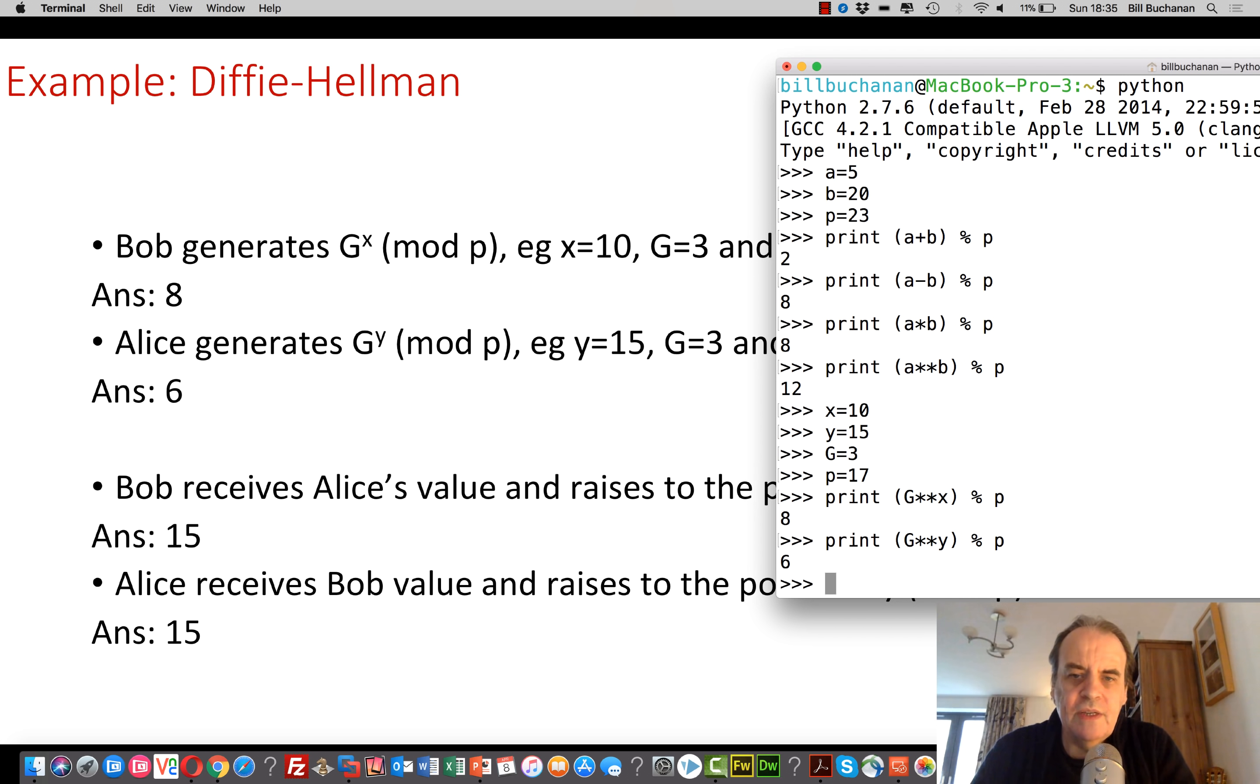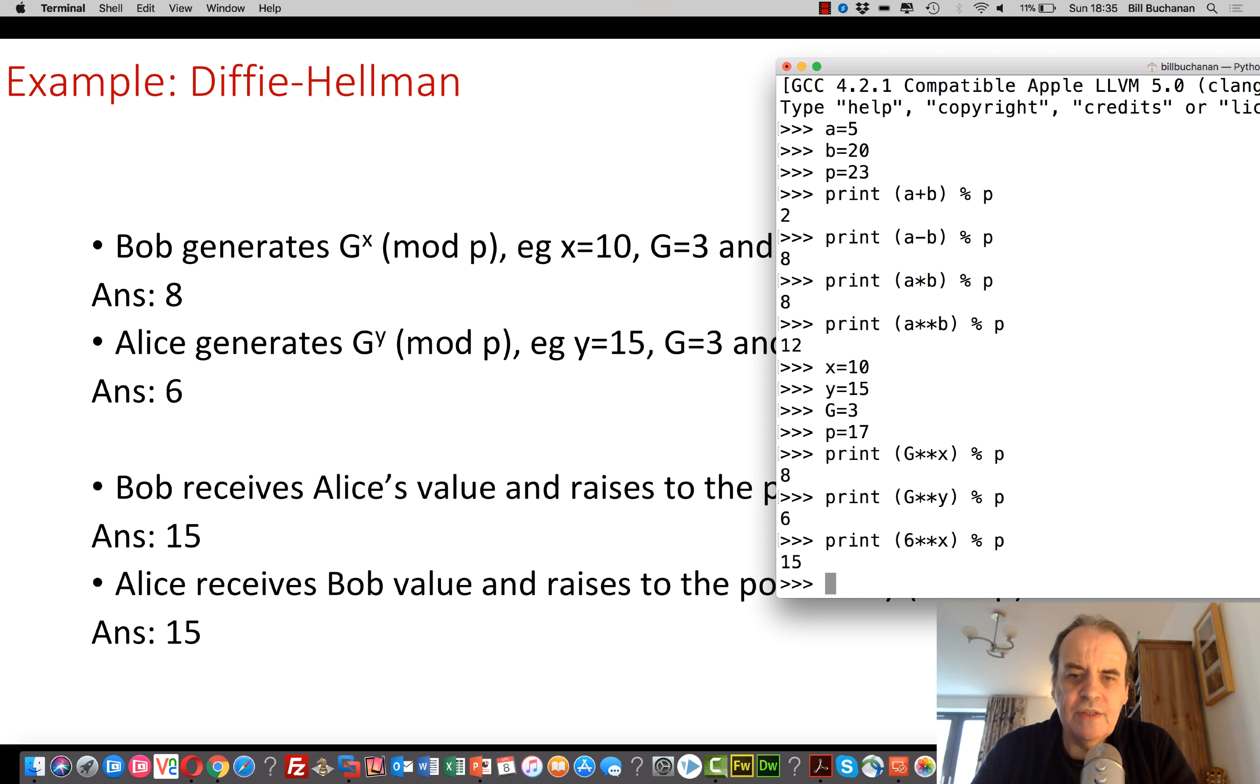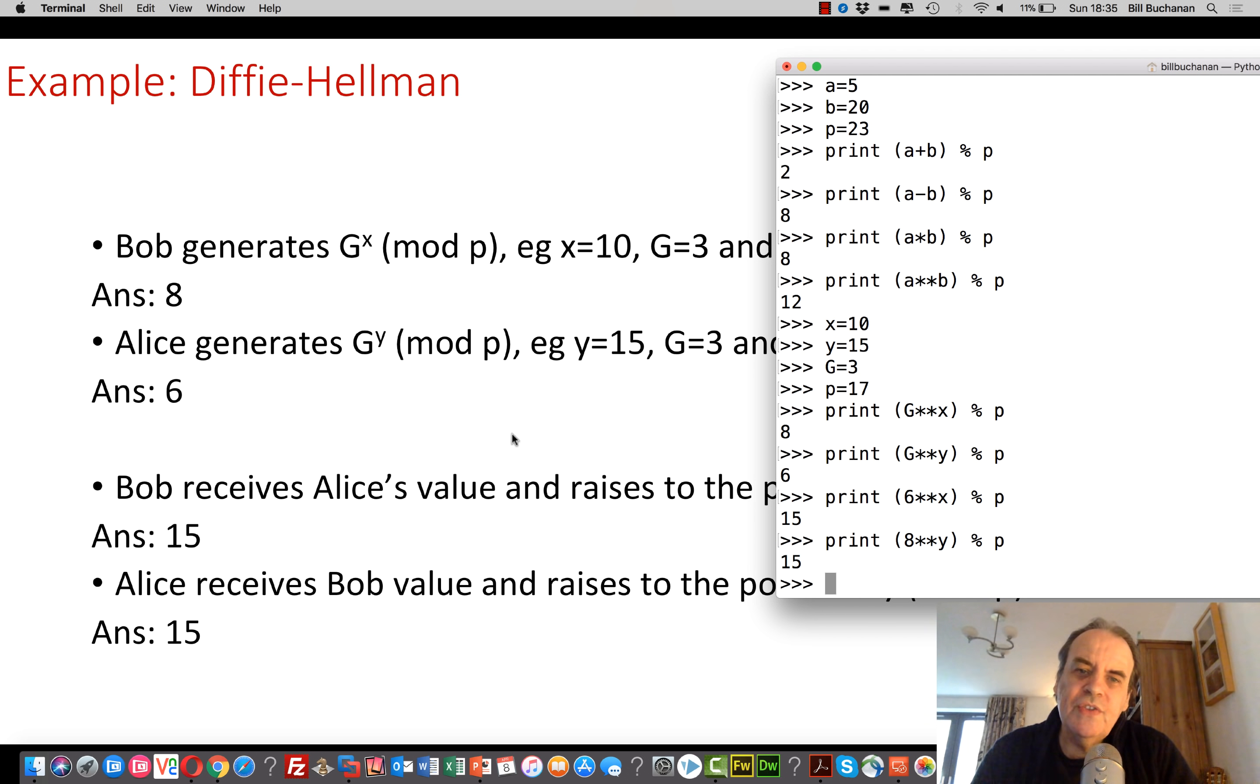Alice does her value. And then Alice sends over her value to Bob. And Bob will raise her value, 6 to the power of his x to get 15. And then Alice will take Bob's value which is 8 and raise that to the power of y. And then take mod p and they end up with the same value. So this is key exchange.